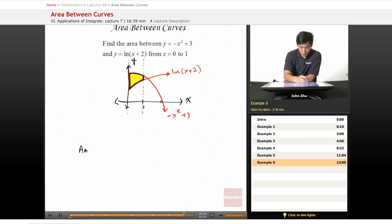Here, area equals from zero to one integrated negative x squared plus three minus ln of x plus two dx. So now we have to do is just solve this integral.